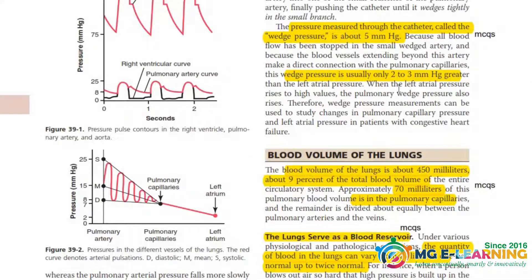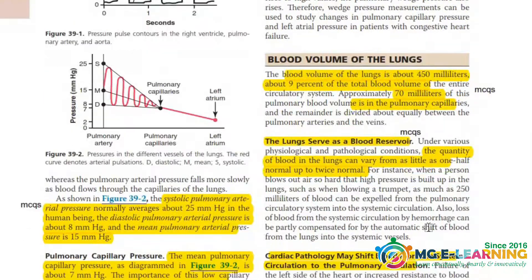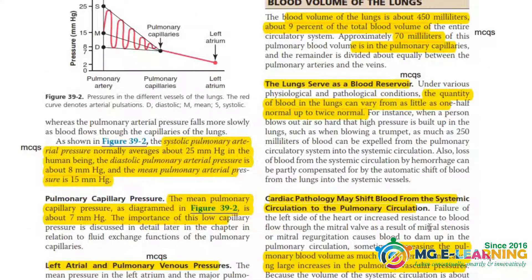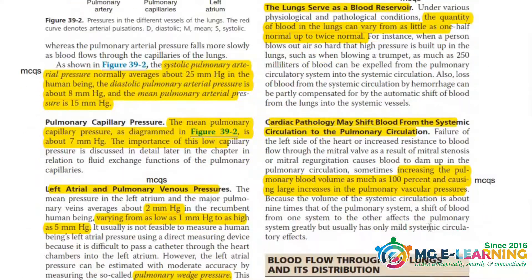The next topic is the blood volume of the lungs. This topic is again important for MCQs, and all the important points are highlighted. You have to memorize all the highlighted MCQ points.